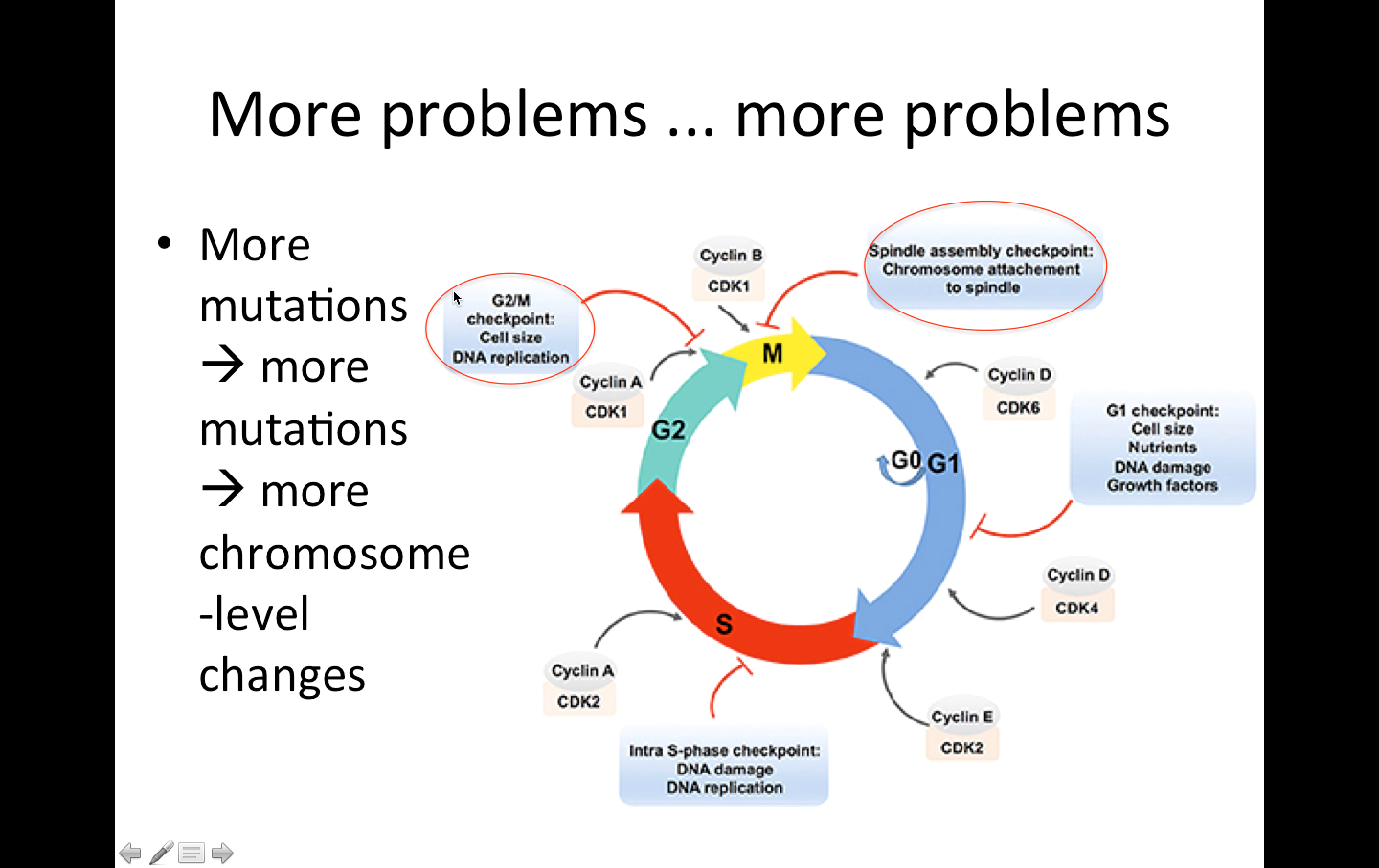This can also lead to more chromosome level changes. As we said, if we have division before DNA is replicated, or if our spindles are not attached to our chromosomes, then we can actually lose whole chromosomes from the cell.